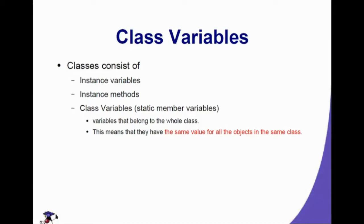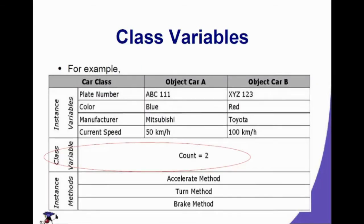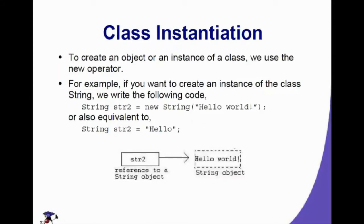Classes consist of instance variables and instance methods, as well as class variables, also called static member variables. These are variables that belong to the whole class, meaning they share the same value across all objects of that class. For example, a class variable 'count = 2' is static. The main method in Java is declared as 'public static void main' — a static method that can be immediately called from different classes as long as they are connected.